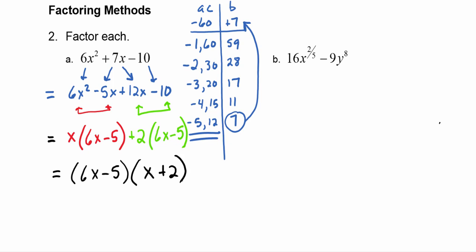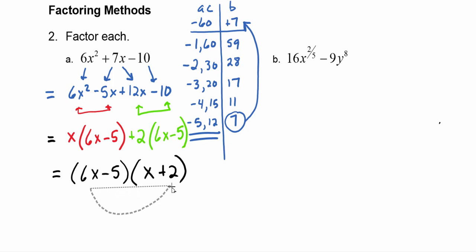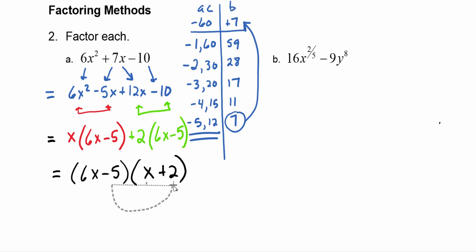We notice each term has a 6x minus 5, so we factor that out and get 6x minus 5 times x plus 2. That is the factorization. We should always double check by mentally FOILing back out: first times first gives 6x squared, outer times outer gives plus 12x, inner times inner gives minus 5x, so 12x minus 5x gives 7x, and last times last gives minus 10. We feel confident we've factored correctly.